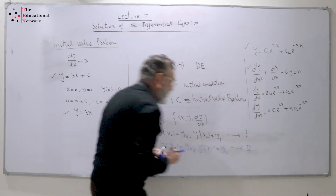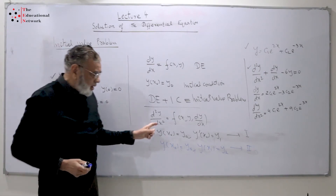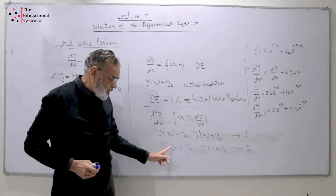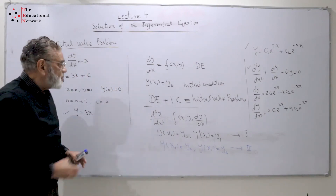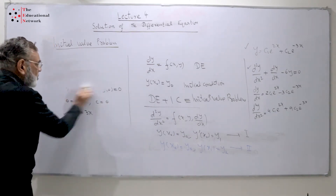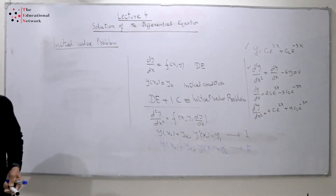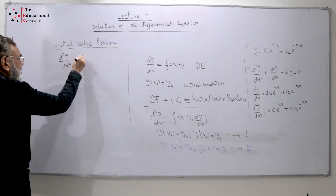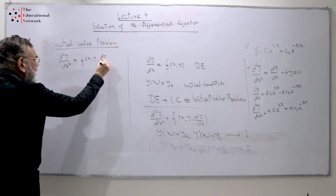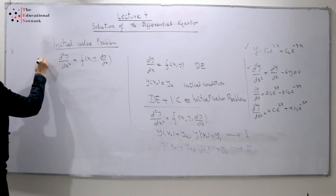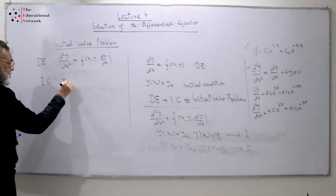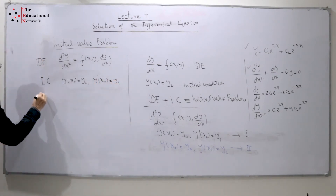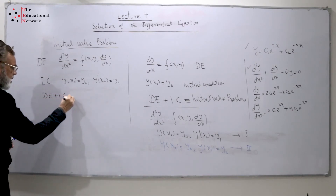If both conditions are defined at the same point, we call it an initial value problem. The general form is d²y/dx² = f(x, y, dy/dx), with initial conditions y(x₀) = y₀ and y'(x₀) = y₁. Differential equation plus initial condition equals initial value problem.